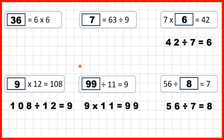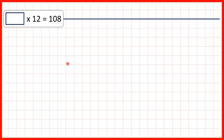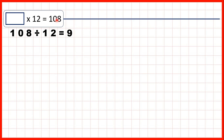Now let's take a closer look at some of these questions. What times 12 is 108? Well, we solve this by dividing 108 by 12 to get 9, so we know that 9 times 12 is 108.